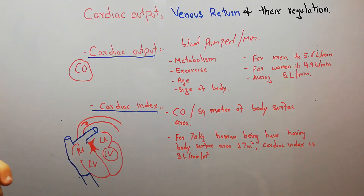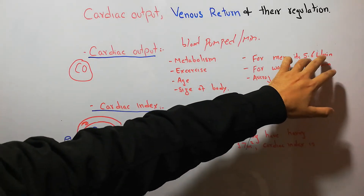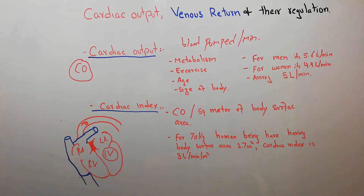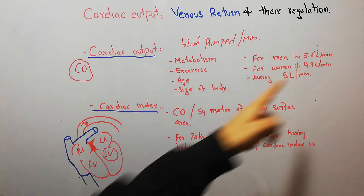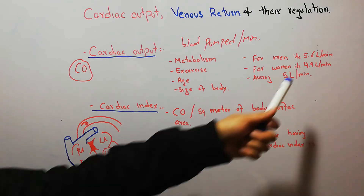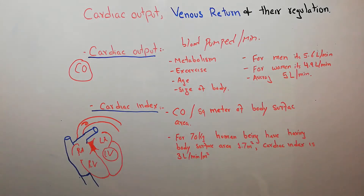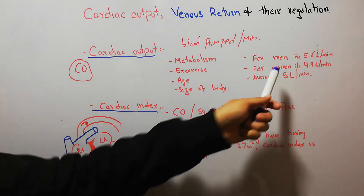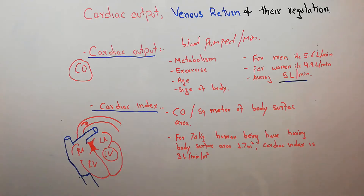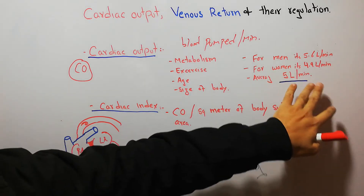The average cardiac output for men is around 5.6 liters per minute — the left ventricle pumps around 5.6 liters of blood every minute into the aorta. For women, it is around 4.9 liters per minute. Considering average age, size, and metabolism, the average cardiac output for a human being is approximately 5 liters per minute.